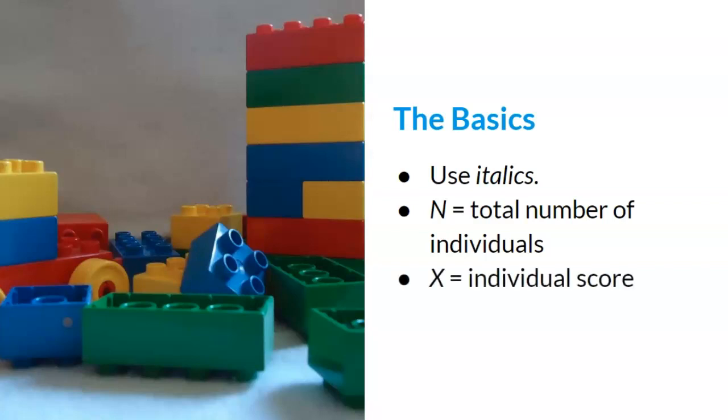Third, the capital letter X italicized stands for an individual score or a single person's score on a specific variable. We will have data sets with a group of scores. Finally, I will introduce our first Greek letter, the Greek letter Σ which is also called sigma. Sigma stands for the sum of or adding values together.